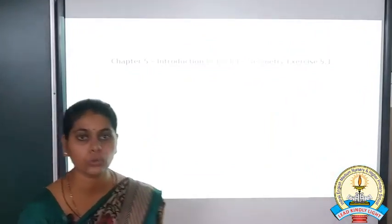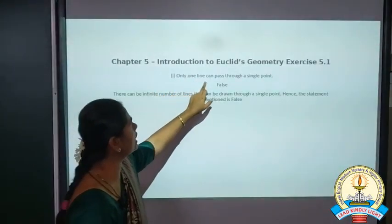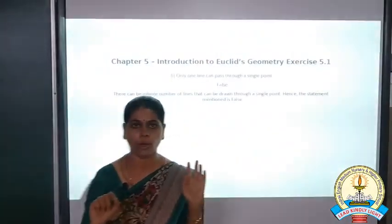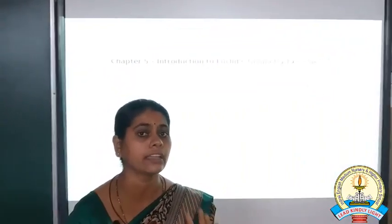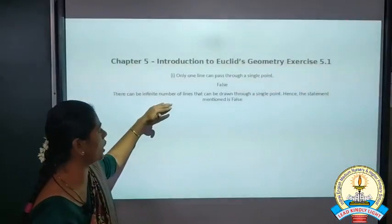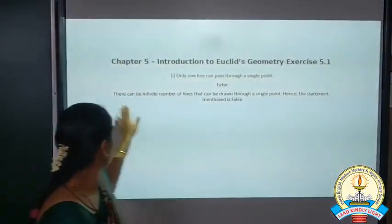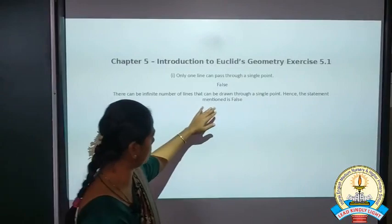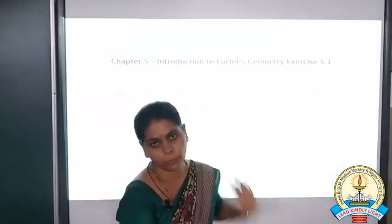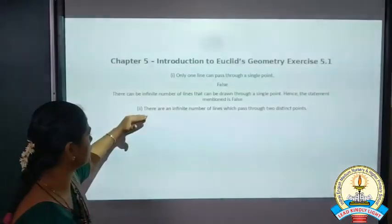First, you have to say whether the statement is true or false. The first statement is: only one line can pass through a single point. Through a single point you can draw only one line. The statement is false, because through a single point you can draw many lines — there can be infinite number of lines drawn through a single point. Hence the statement is false.